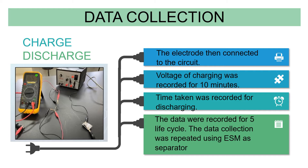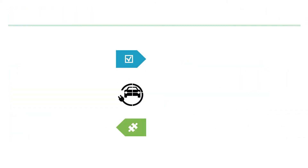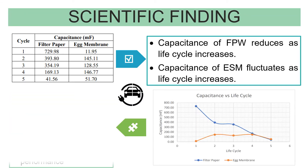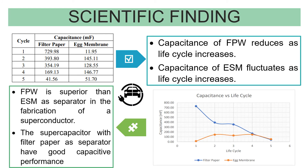The data were recorded for 5 life cycles, and the data collection was repeated using ESM as separator. From the scientific findings table, the capacitance of FPW (filter paper wrapper) reduces as life cycle increases, while the capacitance of ESM fluctuates as life cycle increases.